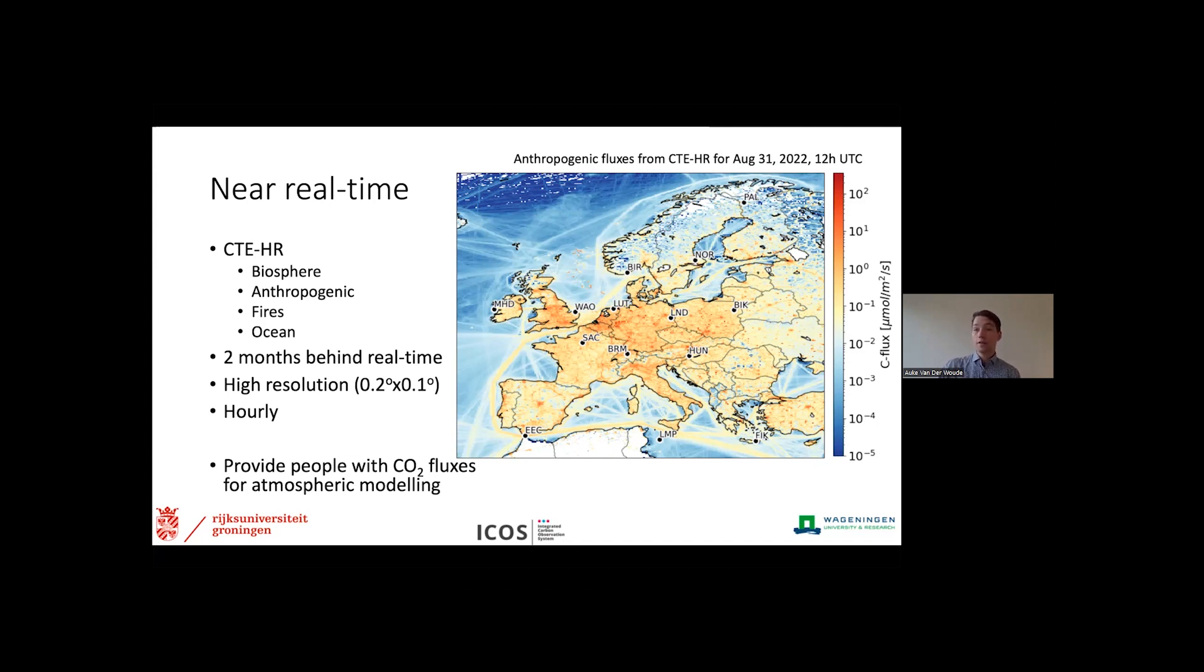We've also made this at a high resolution to be able to study the carbon fluxes at a regional level as well. And with these fluxes, we wanted to provide people prior emissions for atmospheric modeling, to see what the carbon budget was doing over Europe. But we can use these fluxes now, of course, also to get a first estimate of what the European carbon budget did, for example, over this year.